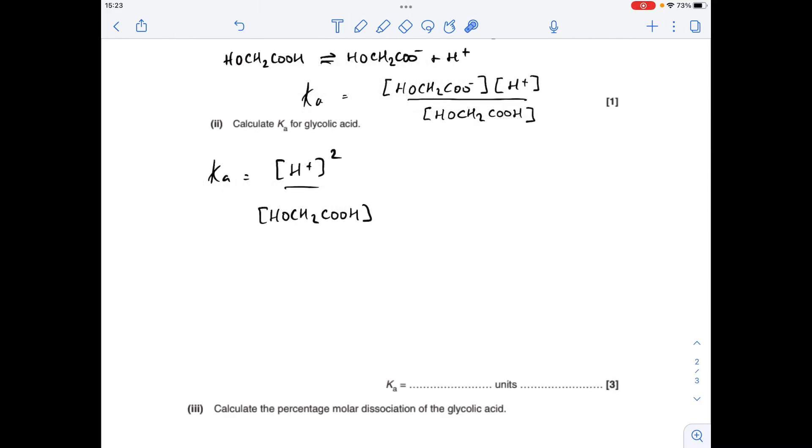Next part, we've got to calculate Ka for glycolic acid. So now we can use the simplified version. Remember, these concentrations will be the same, so we can do this. So have we got the H-plus concentration? Not quite. We've been given the pH, so we're going to go 10 to the minus pH to get the H-plus concentration.